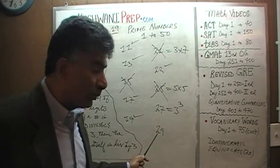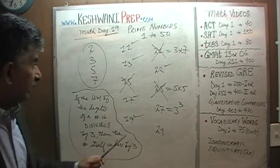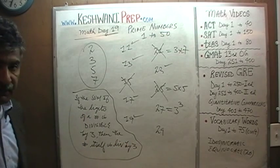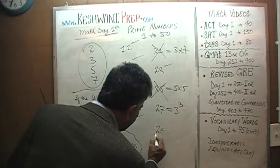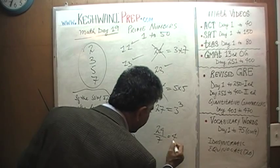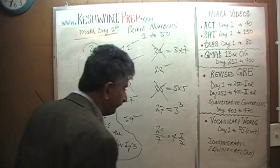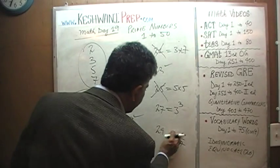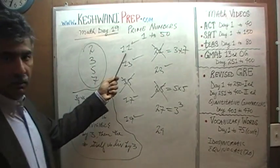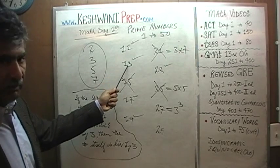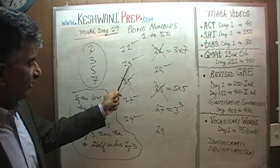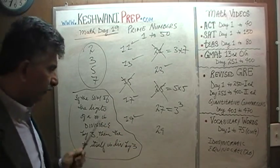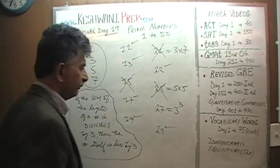29 is a prime number because 29 cannot be divided evenly by 3, by 5, or by 7. 29 divided by 7: 28 is four 7s, giving a remainder of 1. 29 is not divisible by 11 — you'd have either 33 or 22. We cannot divide by 13 because 13 times 2 is 26, giving a remainder of 2. Therefore, 29 is a prime number.